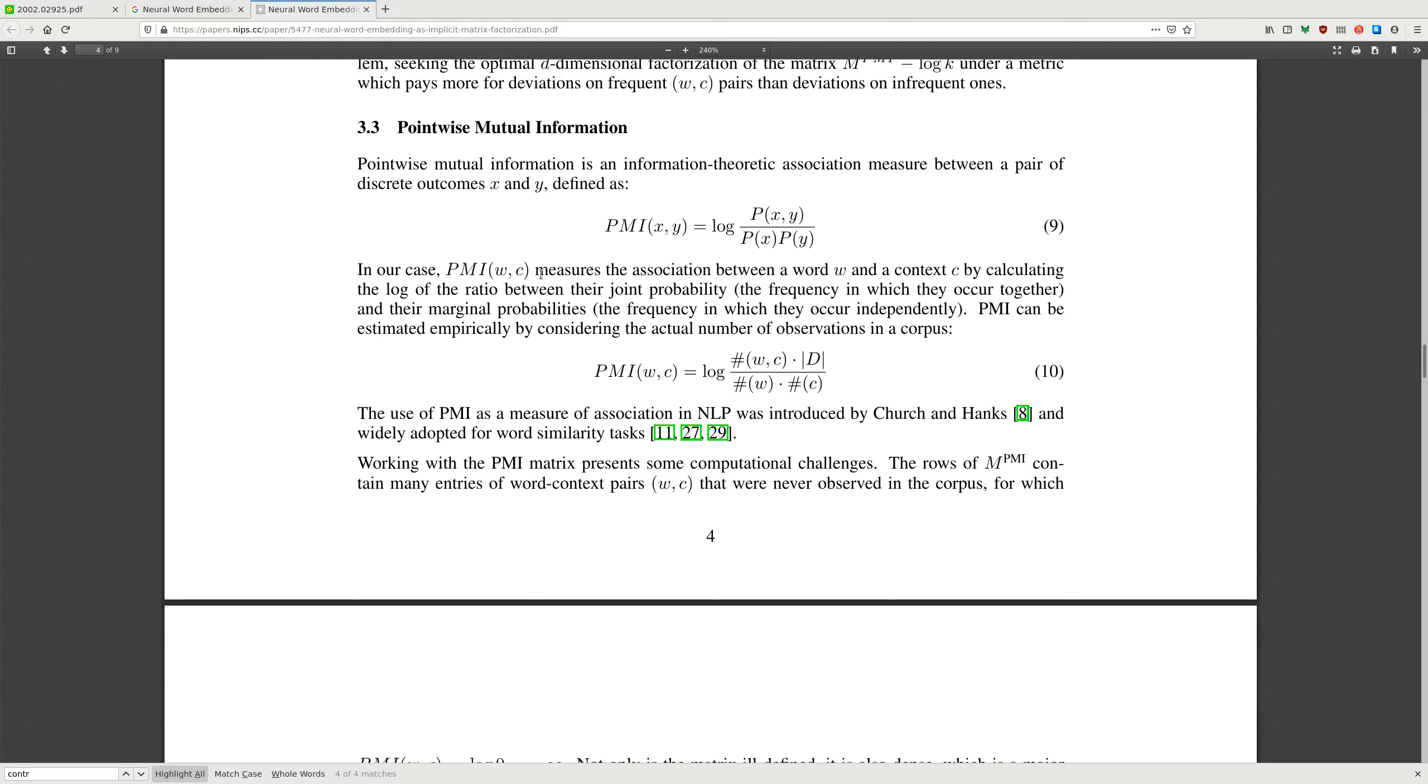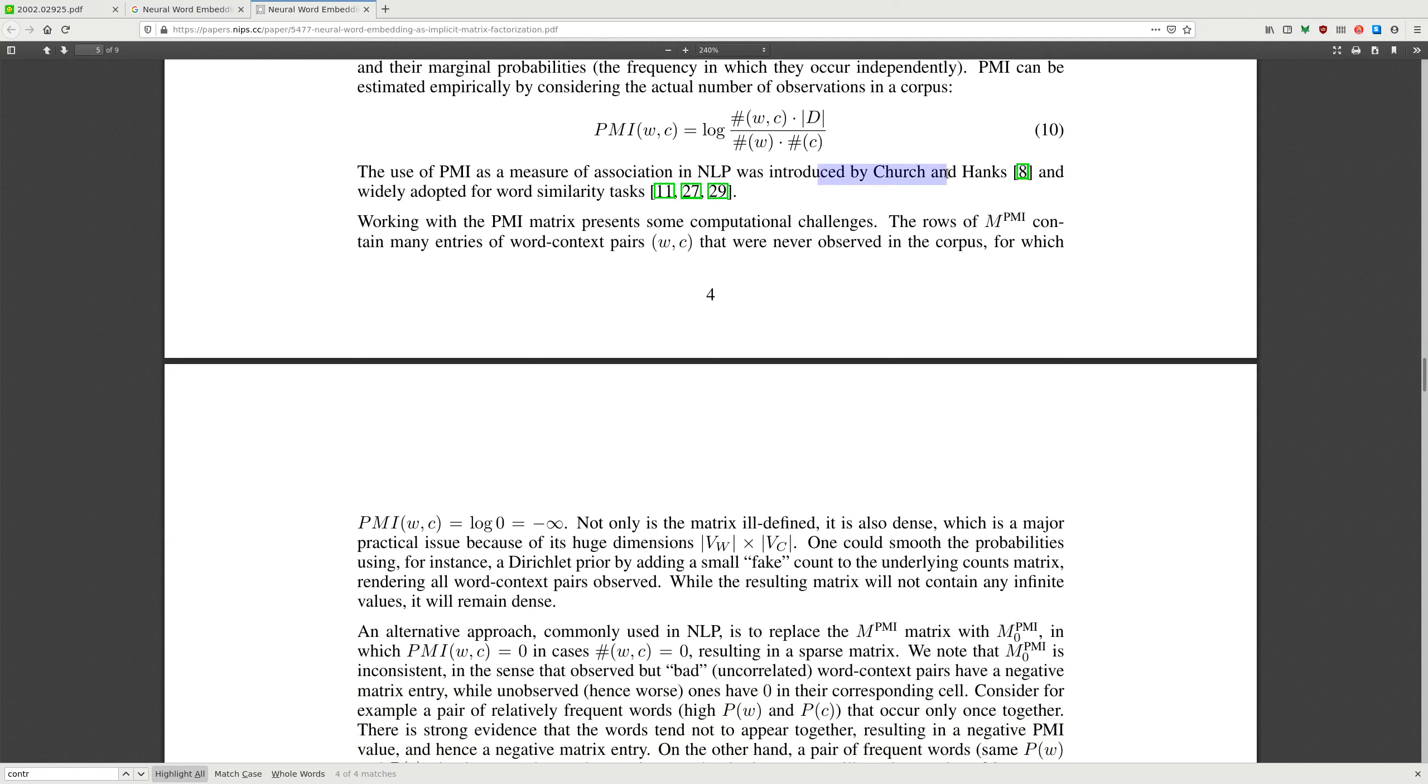Pointwise mutual information. Pointwise mutual information is an information-theoretic association measure between a pair of discrete outcomes, defined as PMI equals the logarithm of probability of x and y divided by probability of x and probability of y. In our case, PMI of the word and the context probability measures the association between word and context by calculating the log of the ratio between their joint probability, the frequency in which they occur together, and their marginal probabilities, the frequencies which they occur independently. PMI can be estimated in practice by considering the actual number of observations in the corpus. The use of PMI as a measure of association in NLP was introduced by Church and Hanks and widely adopted for word similarity tasks.